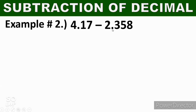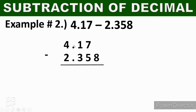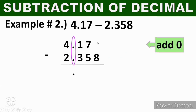Let's have another example. Number 2: 4.17 minus 2.358. Same steps — observe the decimal points of the given decimals, and they must be aligned. We're going to add 0 to 4.17, so it becomes 4.170. Then we subtract. 0 minus 8 cannot be done, so we borrow 10 from 7 — 7 becomes 6 and 0 becomes 10. So 10 minus 8 equals 2. Then 6 minus 5 equals 1.